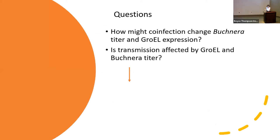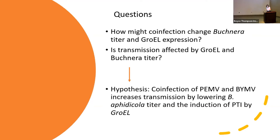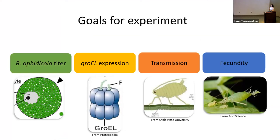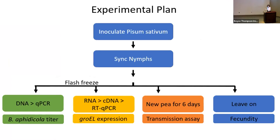We wanted to know whether these findings could translate into our aphid system — using a different virus and a different aphid — and how Buchnera titer and GroEL expression might change. Previous literature has shown that viruses such as Potato Leaf Roll Virus reduce Buchnera titer in the potato aphid, thereby reducing GroEL expression. We also wanted to know how this affects transmission. This led to the hypothesis that co-infection of PMV and BYMV increases transmission by lowering the B. aphidicola titer and therefore reducing plant pattern-triggered immunity induction by GroEL. Our four goals were: measure B. aphidicola titer, measure GroEL expression, assess transmission, and assess fecundity.